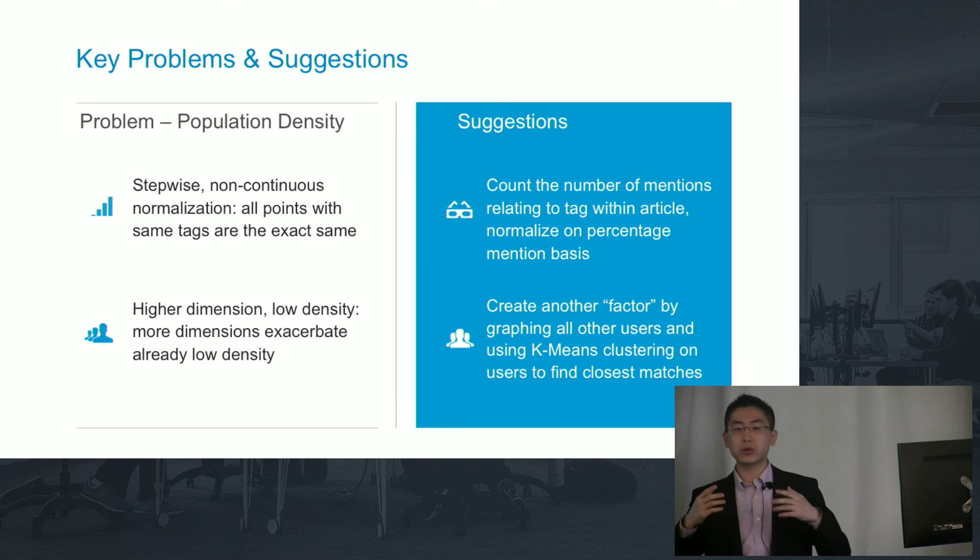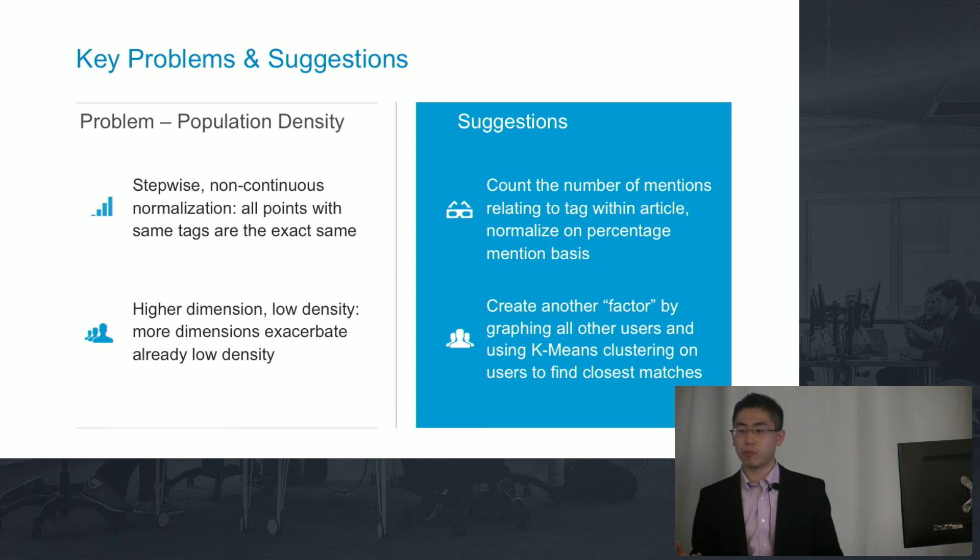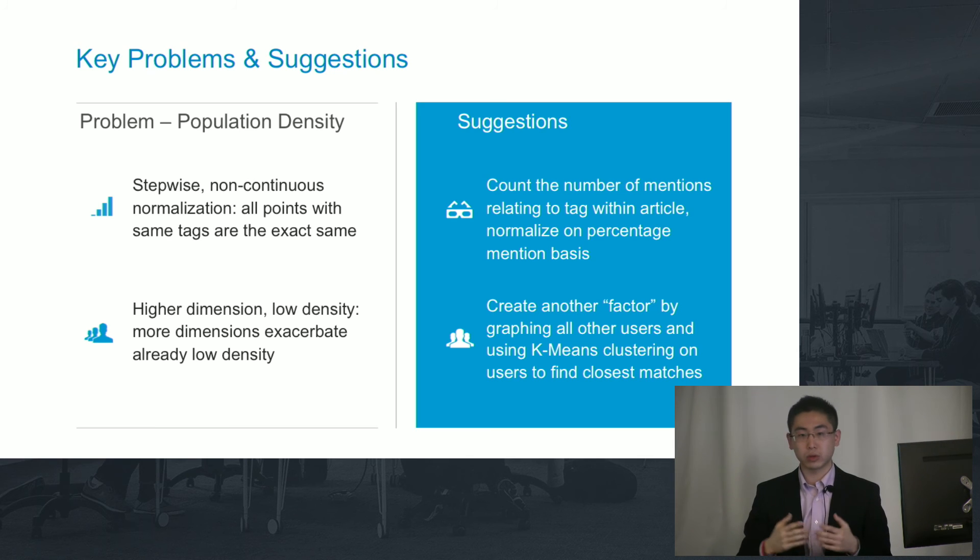And similarly, as you get higher and higher in dimensions, you'll end up with increasingly low density given the same number of points. As you can imagine from zero, one on a line, distance is one and a square from point to point, it's square root of two and a cube from a corner to corner, it's square root of three. So the distance gets larger and larger for the same number of points for increased amount of dimensions.